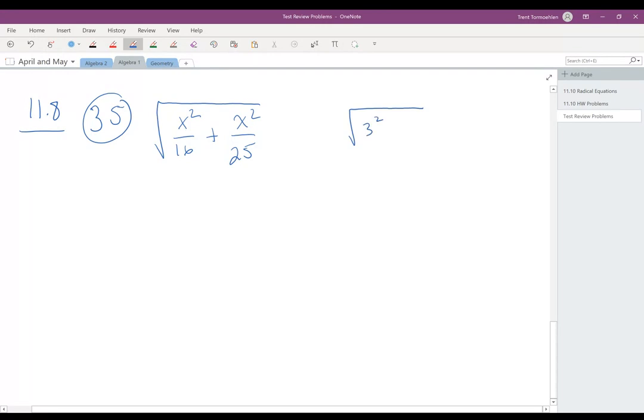If you have 3 squared plus 4 squared equals, and you want to take the square root of that, this does not equal 7. And I don't think any of you would have put 7 down. I think you would have done 9 plus 16 and got 25 and taken the square root of it and gotten 5.